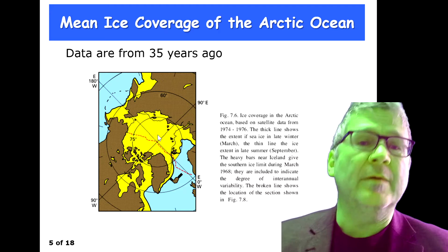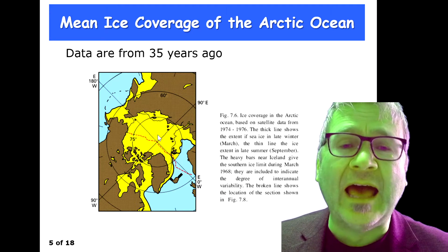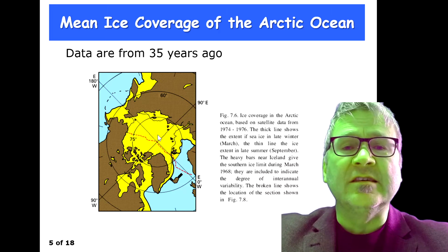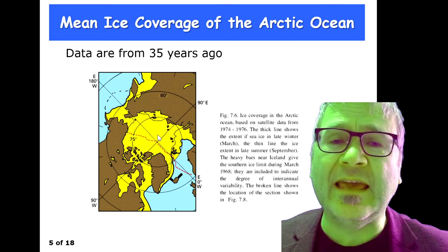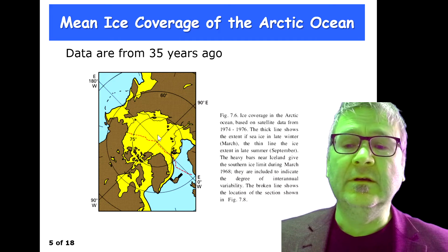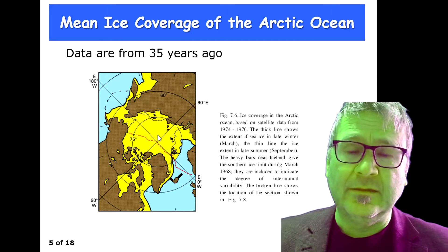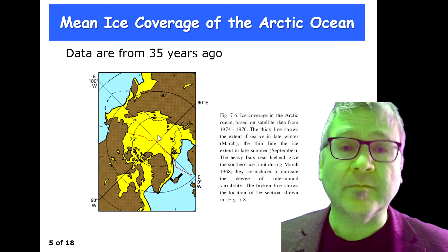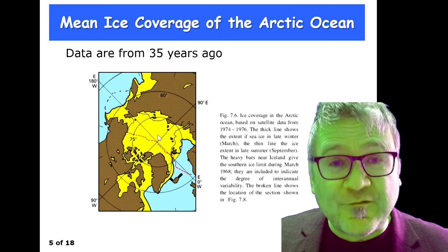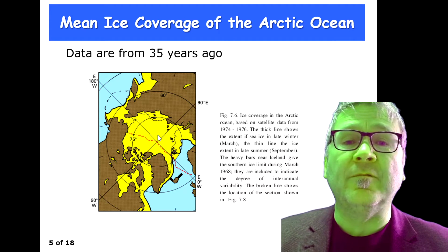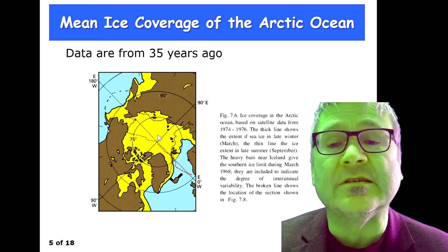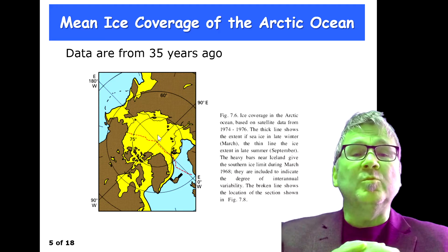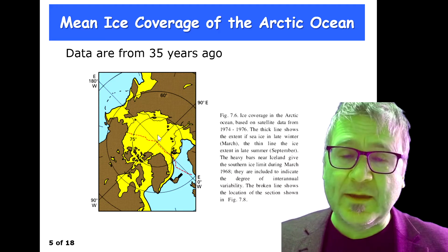One important factor is the ice albedo effect — it reflects solar radiation and keeps the region cold. It is the reflection from a white surface. That's one big aspect.